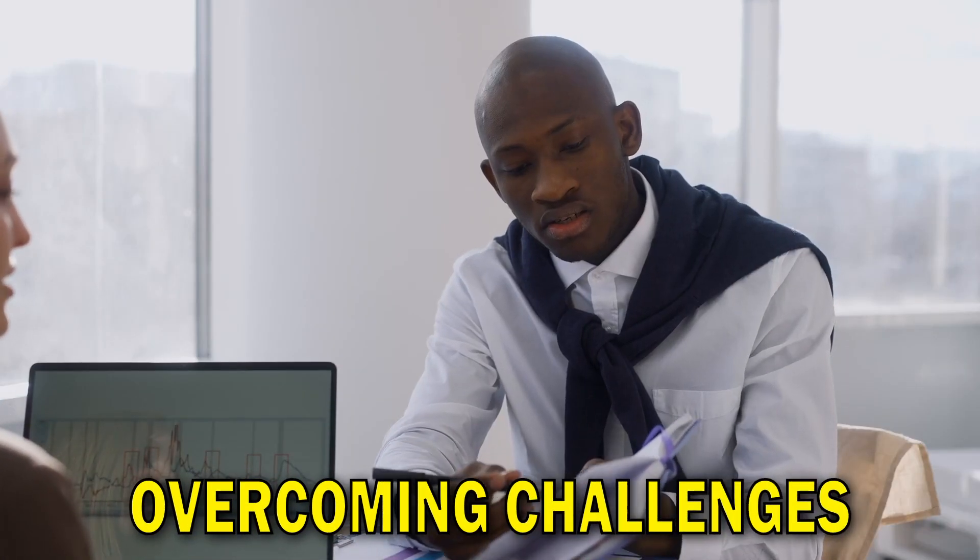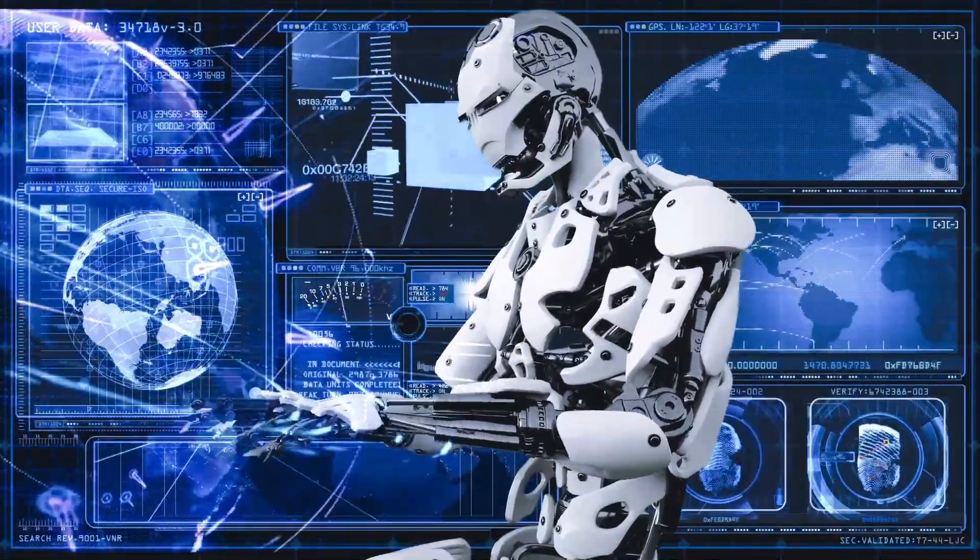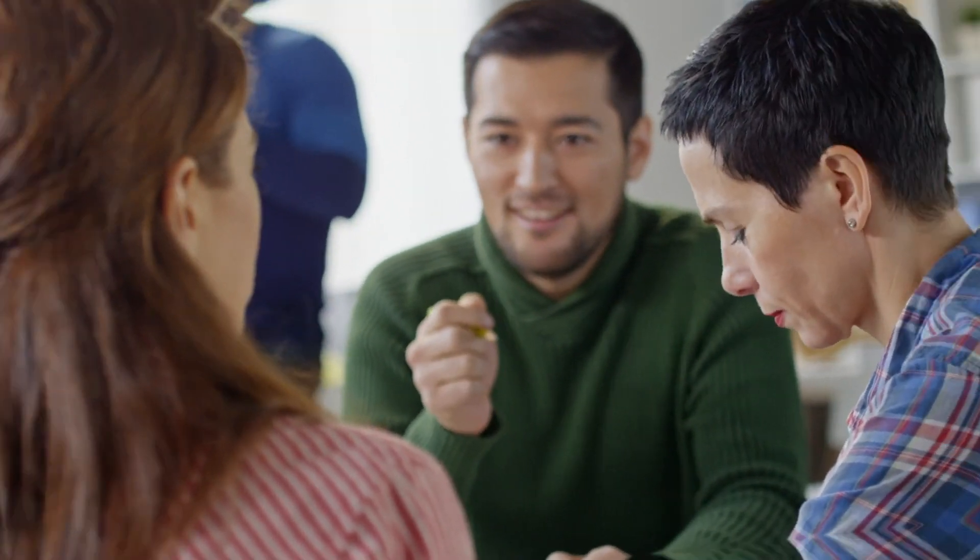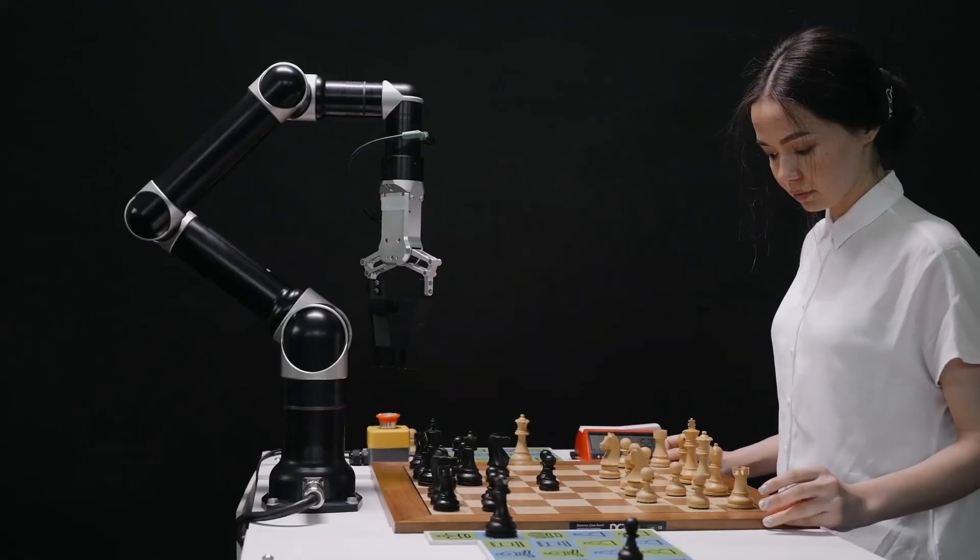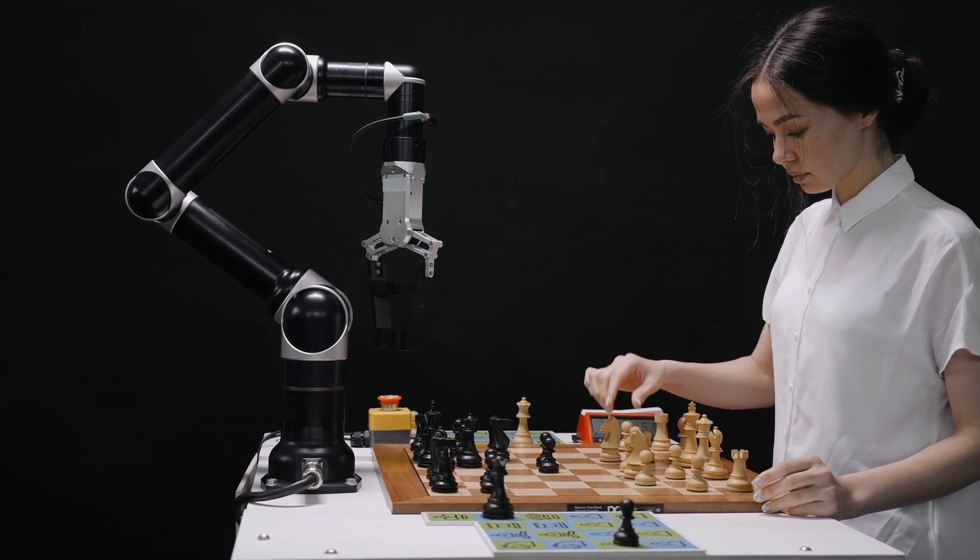Overcoming challenges. While AI can bring great advantages, there are things to think about when putting it into action. Businesses need to handle worries about things like keeping data private, doing things in an ethical way, and teaching employees how to use AI properly. Making sure these things are sorted out helps switch to using AI without any big problems.